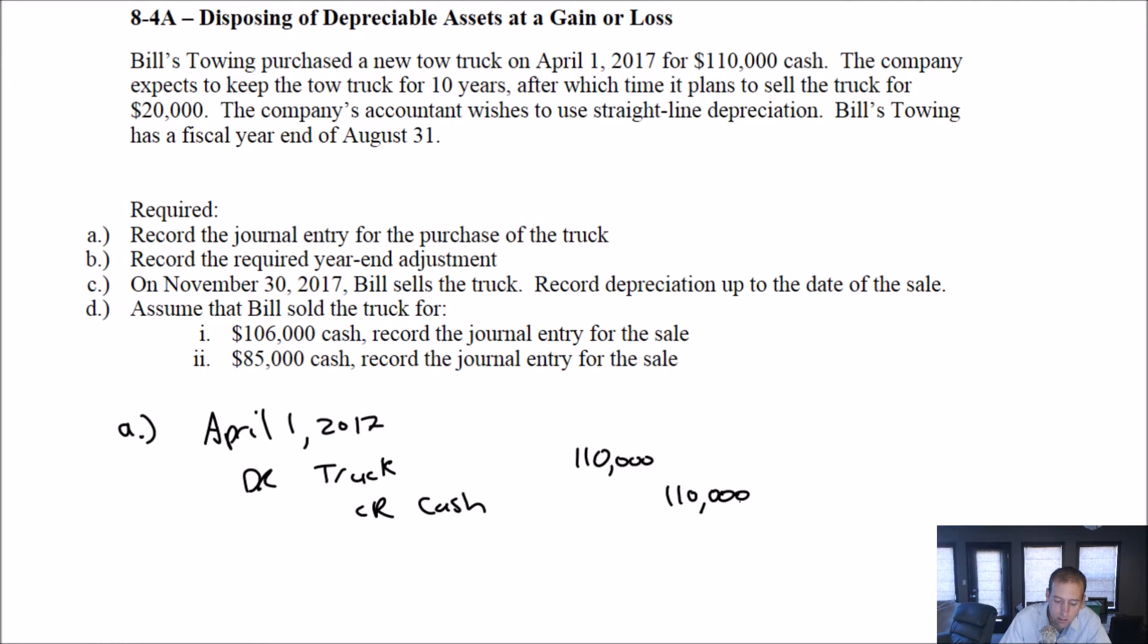Company expects to keep the truck for 10 years, after which time it plans to sell it for $20,000. So $110,000 is our cost. Our residual value is $20,000. So our depreciable cost is $90,000. We're going to depreciate that $90,000 straight line over 10 years. So that's at a rate of $9,000 per year. We've got our depreciation rate.